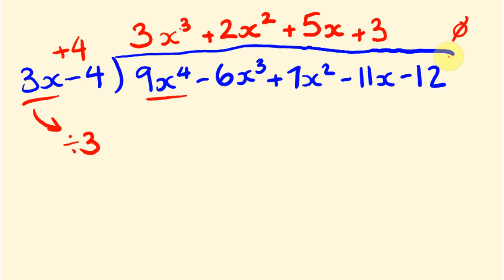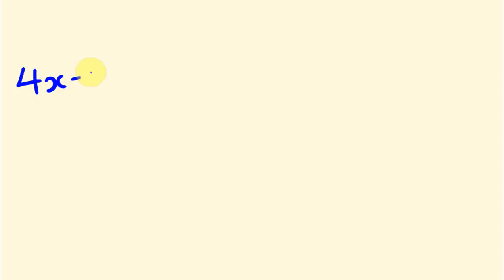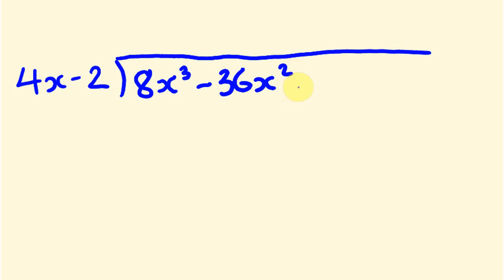How did you go with that? What about one more example? Let's do 4x minus 2 and divide this into 8x cubed minus 36x squared plus 12x plus 4. You might want to pause the video and give this one a go before I work through it.